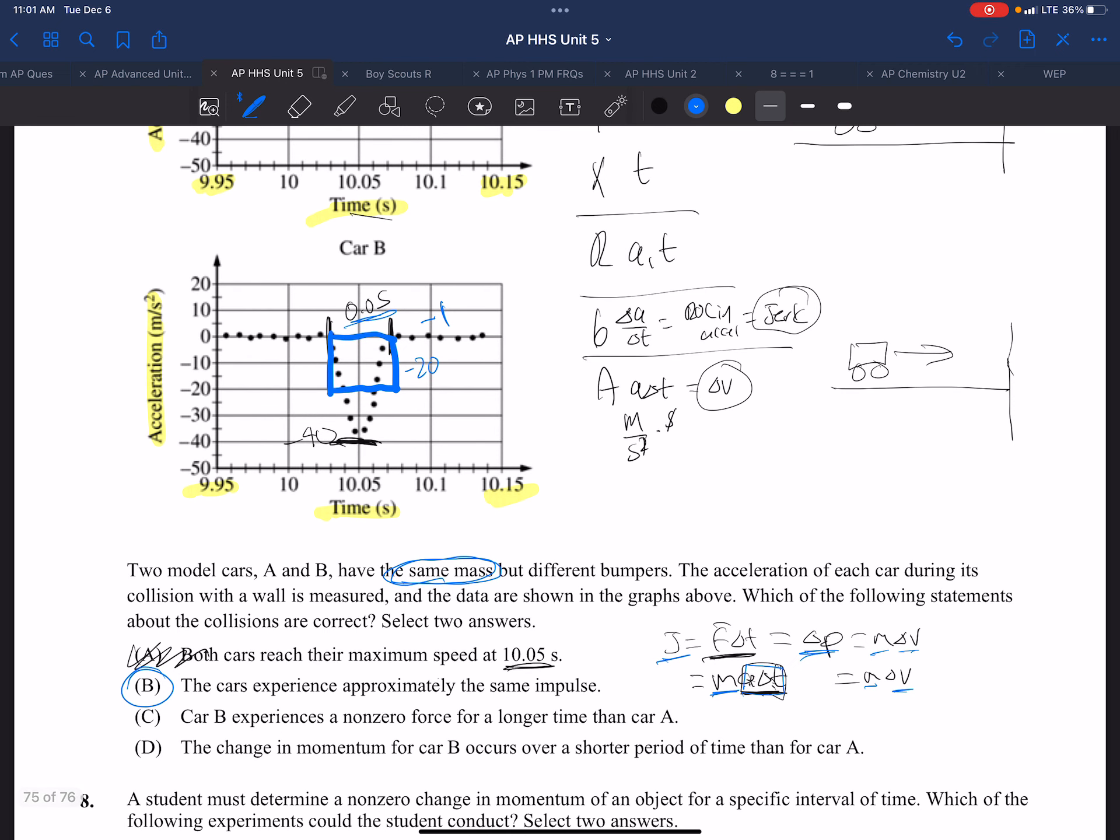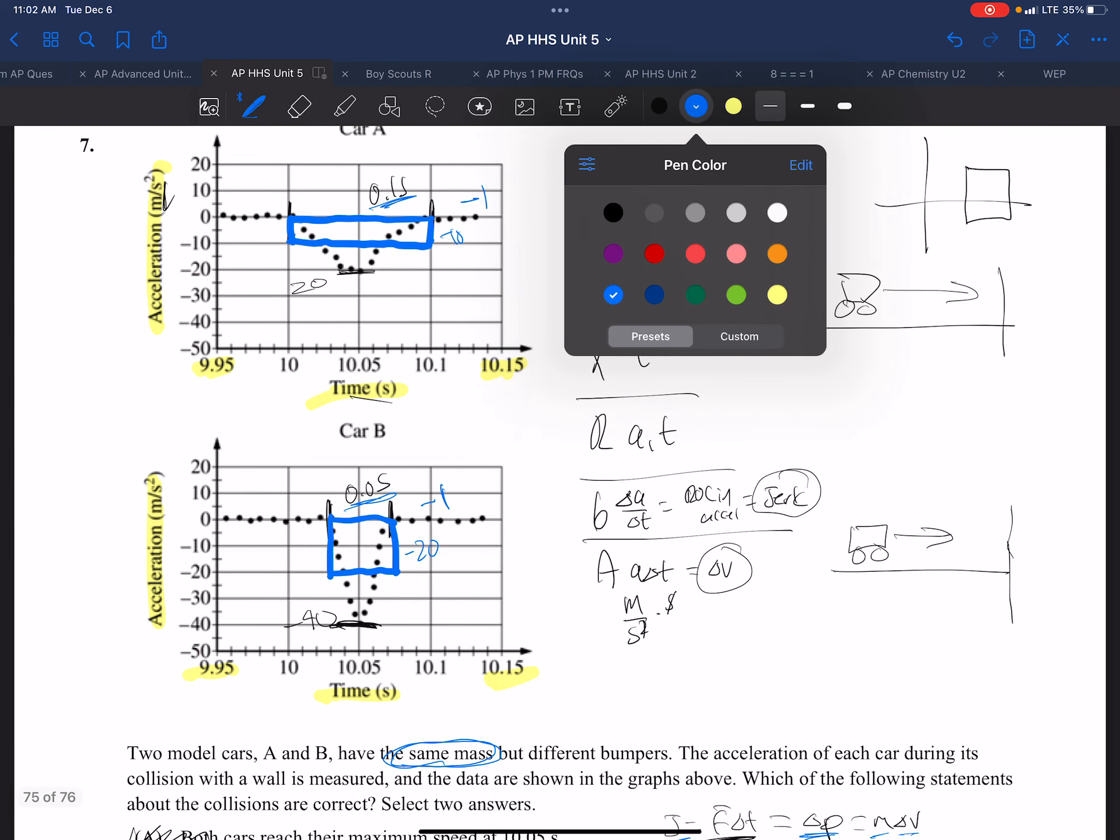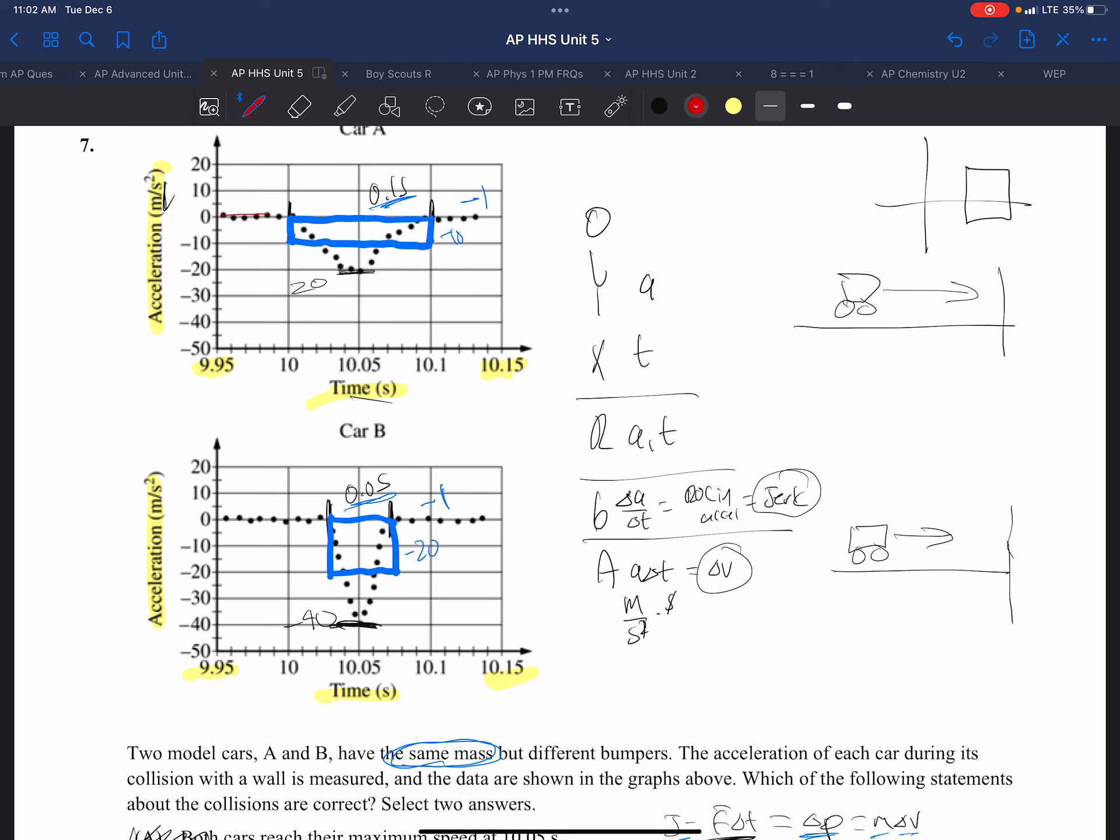Cart B experiences a non-zero force for a longer period of time than A. Well, the force occurs when there's acceleration. And if we look at what's being depicted on the graph, there's zero acceleration here and zero acceleration here.